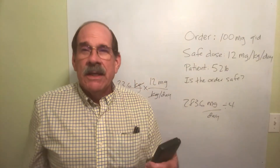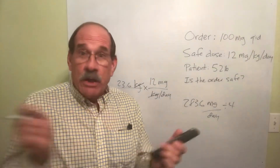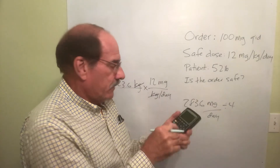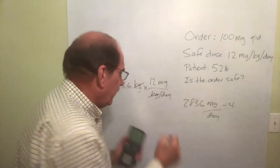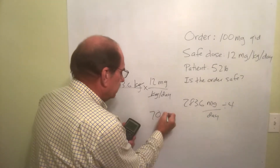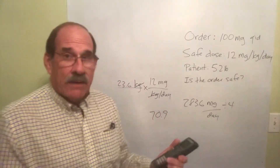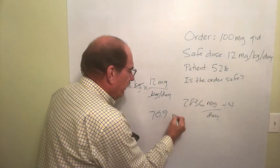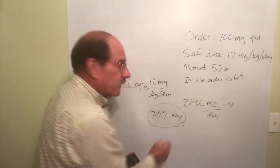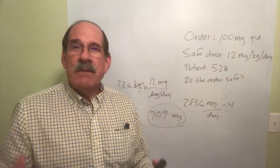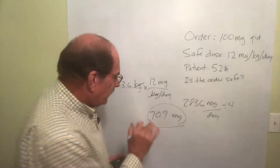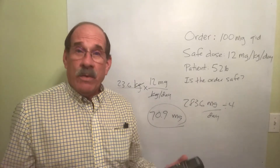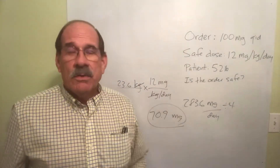Since it's given four times a day, leave that number in the calculator — don't round it off and plug it back in, that wastes time and effort. Just divide by four. The number is 70.9091 milligrams. That was divided by the number of times per day, so now that's the number of milligrams per dose. Each time the patient gets medicine, that is the safe amount a 52-pound patient can receive.